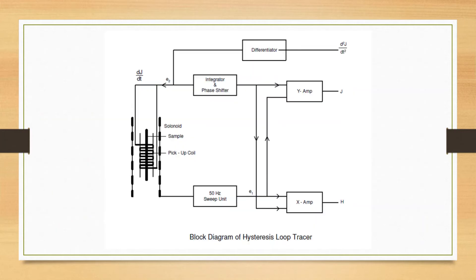Here is the block diagram of the hysteresis loop tracer used in this laboratory. There is a solenoid, and inside the solenoid there is a pickup coil. Inside the pickup coil there is a space for the sample. Rod-type samples are placed in the pickup coil to measure the retentivity, coercivity, and magnetic saturation for that magnetic material.